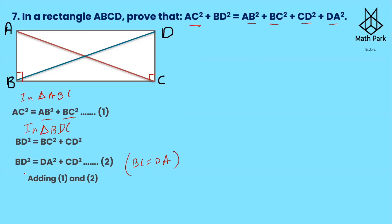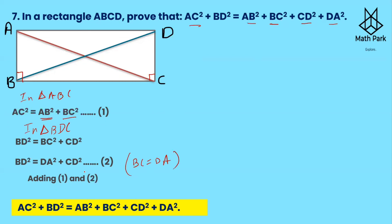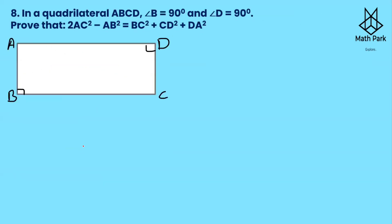Adding equations one and two, since BC = DA (opposite sides of rectangle are equal), the left hand side gives AC² + BD², and the right hand side gives AB² + BC² + BC² + CD² + DA² — wait, simplified: AB² + BC² + CD² + DA². So AC² + BD² = AB² + BC² + CD² + DA². Got it!